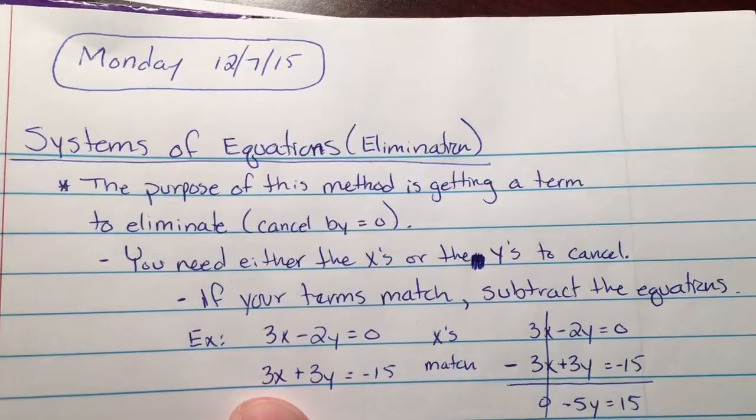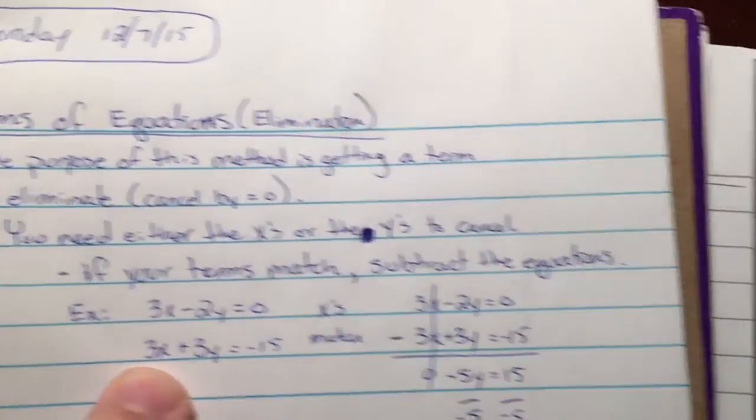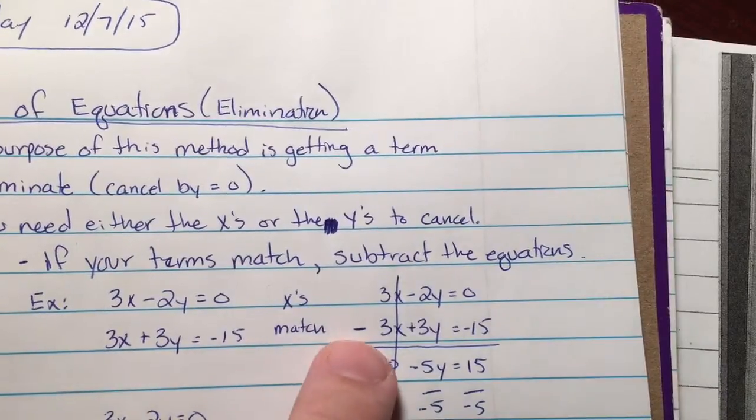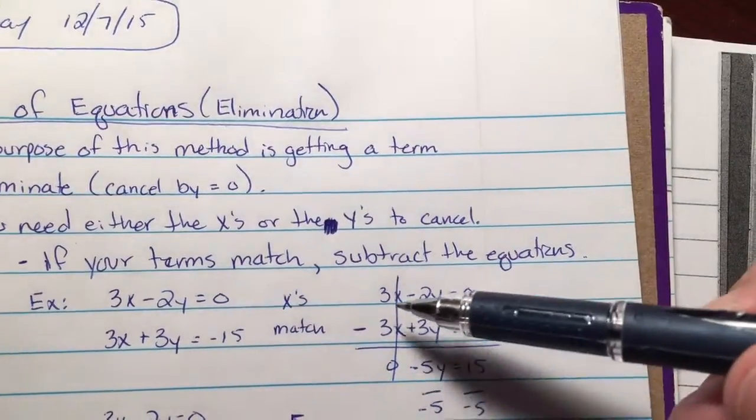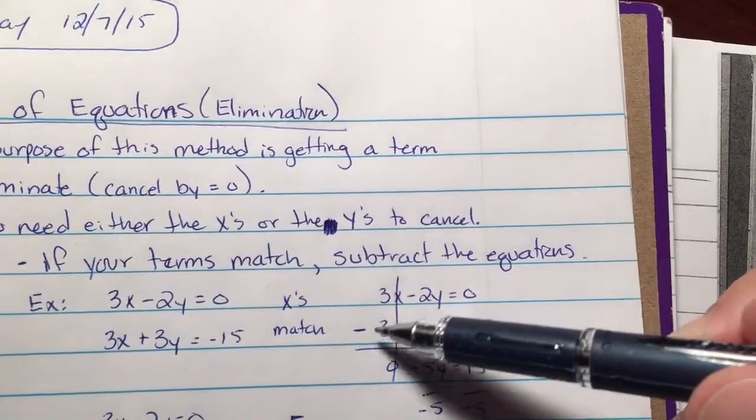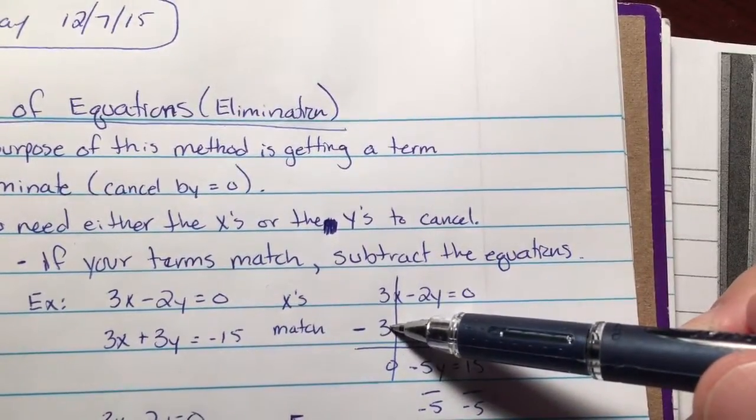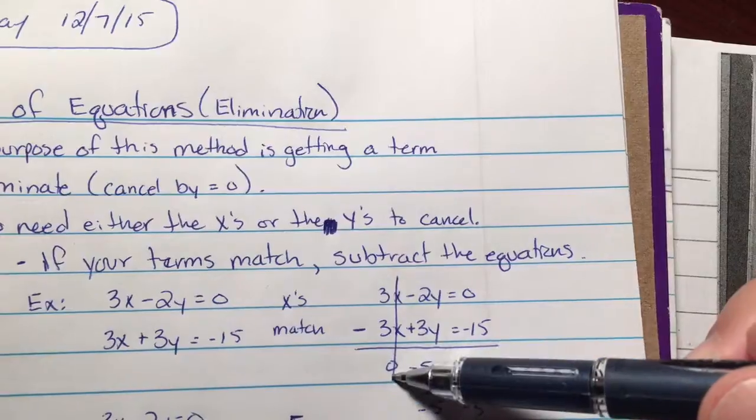So here, we've got matching x's. That means we need to subtract them. So I start that process over here, I just stick a minus sign out front. Now, you're going to go through and you're going to say each term, 3x minus 3x. That equals zero, so that canceled out.